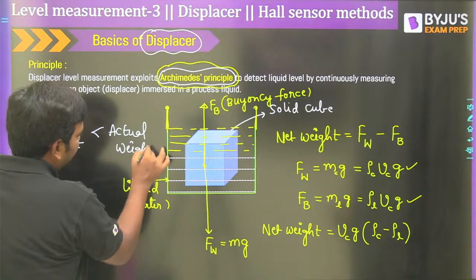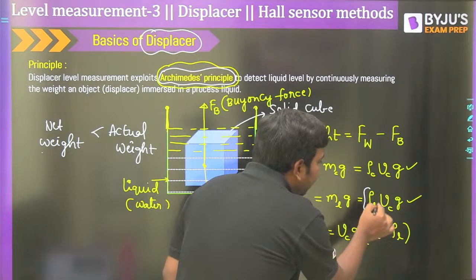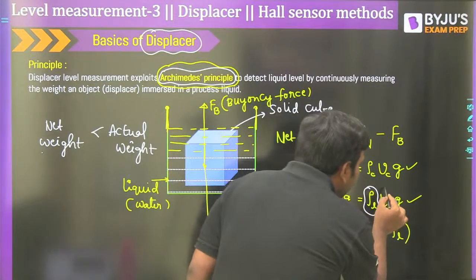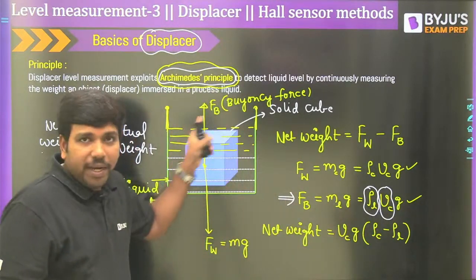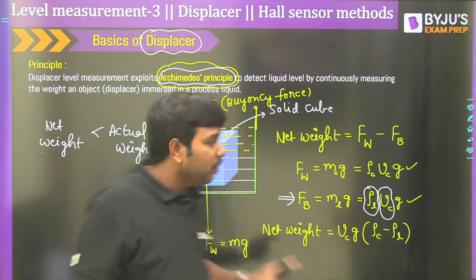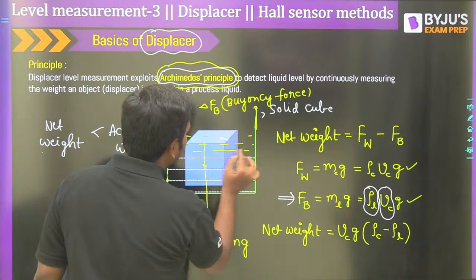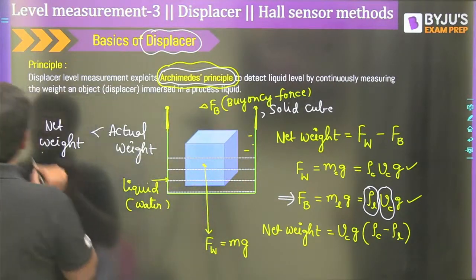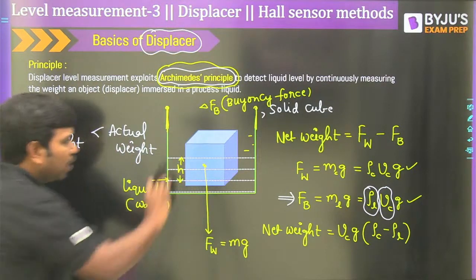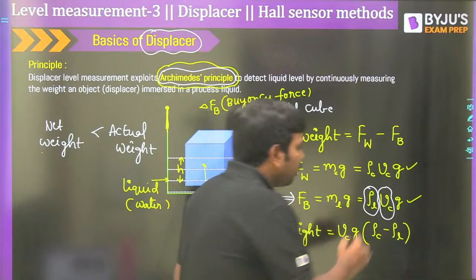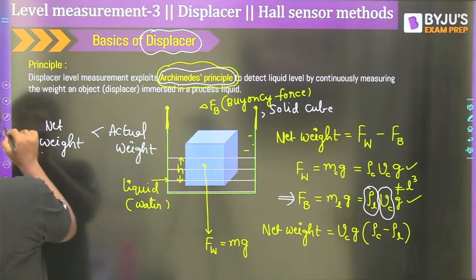This total assembly is considered the weight measuring instrument. In industrial process applications, we need to convert every variable to the standard current range of 4 mA to 20 mA so that the signal can be transmitted from the remote field to the control room. The voltage output from the potentiometer is converted to current by a voltage-to-current converter, giving a standard 4–20 mA range.